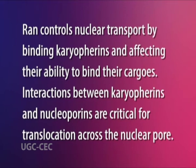RAN controls nuclear transport by binding karyopherins and affecting their ability to bind their cargoes. Interactions between karyopherins and nucleoporins are critical for translocation across the nuclear pore. mRNA may only be transported from the nucleus to the cytoplasm and not in the other direction; the asymmetry of RAN-GTP versus RAN-GDP is thought to be one important factor driving this directional transport.